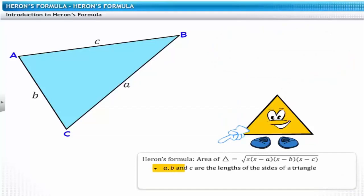Here A, B, and C are the lengths of the sides of a triangle. S is the semi-perimeter of a triangle. The semi-perimeter, as the name suggests, is half of the perimeter and can be calculated as half of the sum of the lengths of the three sides.